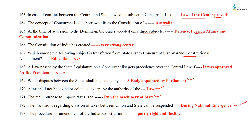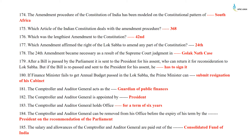The procedure of amendment of the Indian Constitution is partly rigid and partly flexible. The amendment procedure of the Constitution of India has been modeled on the constitutional pattern of South Africa. Which article of the Indian Constitution deals with the amendment procedure? It is Article 368. Which was the lengthiest amendment of the Constitution? It was the 42nd Constitutional Amendment Act, 1976, also known as the mini-constitution of India. Which amendment affirmed the right of the Lok Sabha to amend any part of the Constitution? It was the 24th Constitutional Amendment Act. The 24th Amendment became necessary as a result of the Supreme Court judgment in the Golaknath case, 1967.